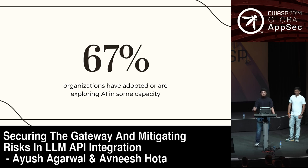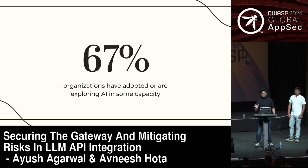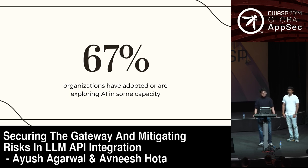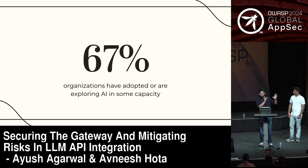Large language models — the word 'language' is the most important part, because it's not a thinking model, it's a language model, it's a probabilistic model. It can't understand things, but it can tell you: after this word, this word makes more sense than the other word.